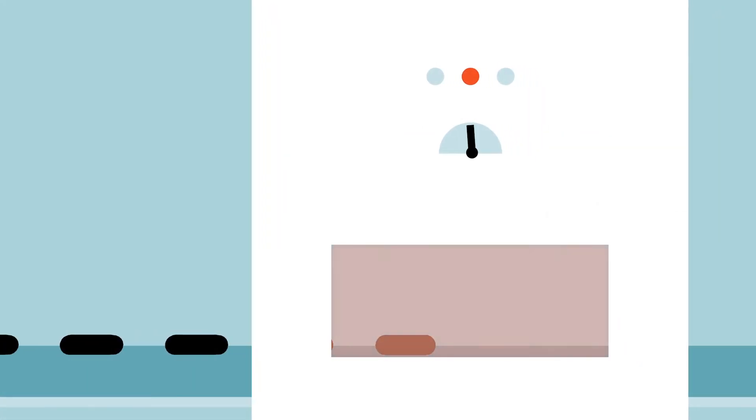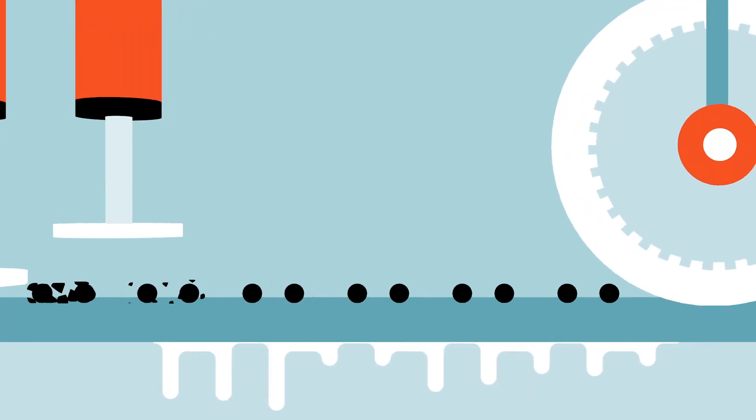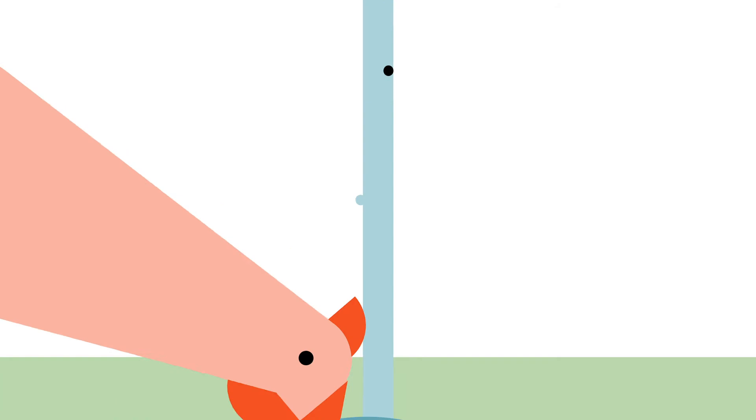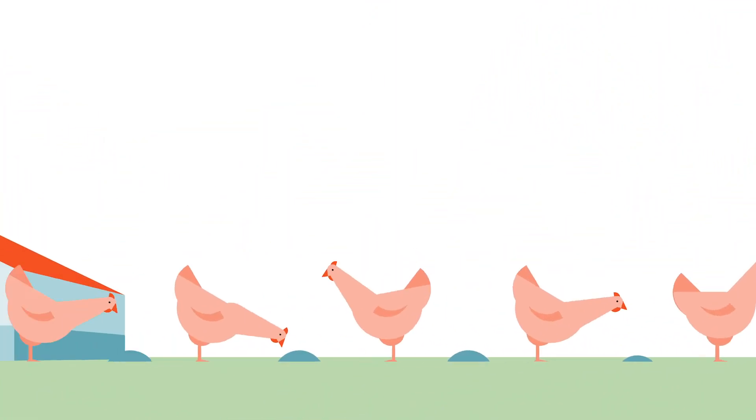Larvae are harvested, oven-dried, and pressed to extract oil rich in fatty acid. Then ground into a high-protein meal, ideal for animal feed. It all creates a zero-waste ecosystem.